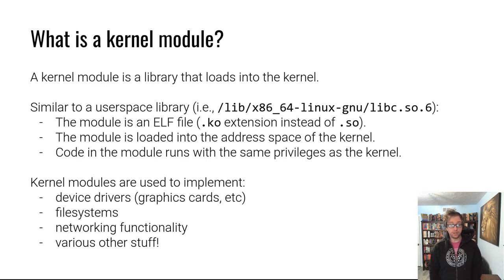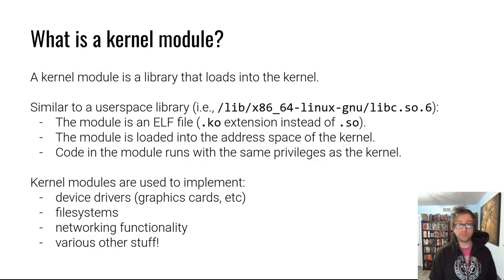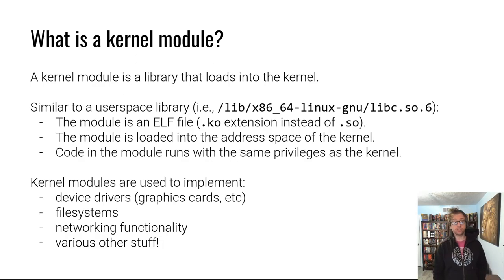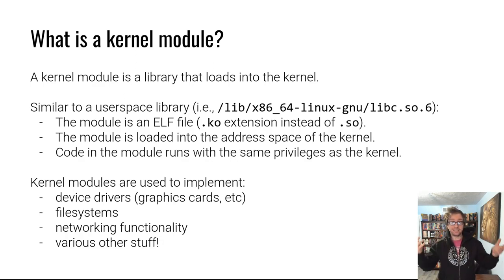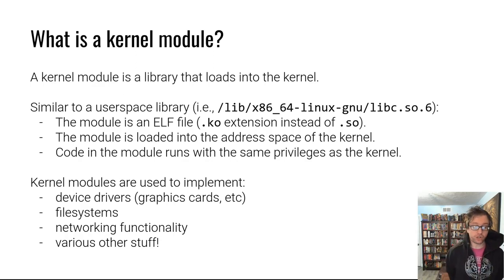A kernel module is an ELF file — it has a different extension, .ko instead of .so, but it is an ELF file with segments, sections, etc., just like any ELF file. And just like a shared object library, it is loaded into the address space of the kernel, similar to how a library is loaded into the address space of a process. The module runs as the kernel.